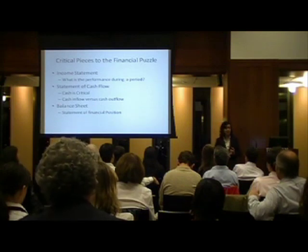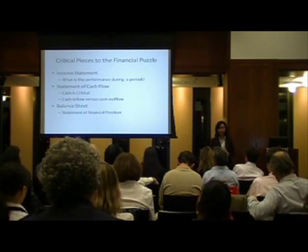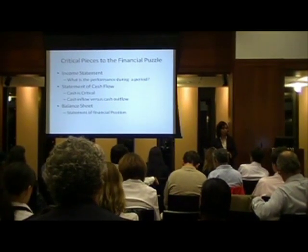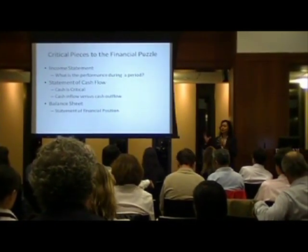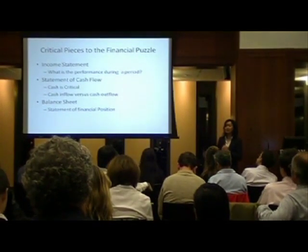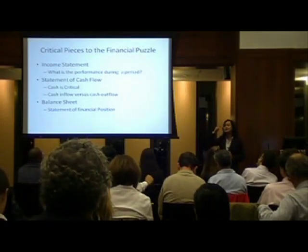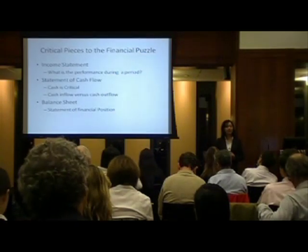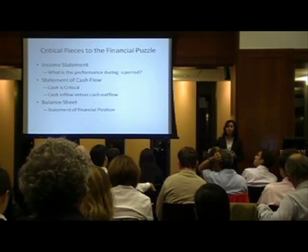The first is the income statement. The second is the statement of cash flows. And the third is the balance sheet. These are the three basic financial statements you must include in your business plan. The key takeaway is that all of these financial statements are linked together. When you think about numbers in one financial statement like the income statement, you need to think about how those numbers impact the statement of cash flows and the balance sheet.